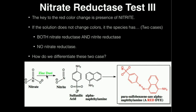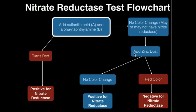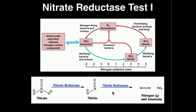However, if we add the zinc and there's no color change, what does that mean? That means that we didn't form any nitrite with the addition of the zinc. That means that both of these enzymes were produced by the bacteria — the nitrate was converted to nitrite, and then the nitrite was converted to nitrogen gas. There's no residual nitrate for the zinc to react with, so there's no red color change. So if we add the zinc dust after no initial color change and we still don't see a color change, then this is a positive result for nitrate reductase. In fact, this actually means that both enzymes were produced: nitrate reductase and nitrite reductase.